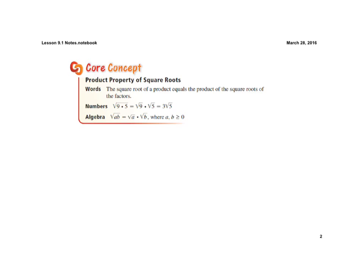If you remember our perfect squares, the square root of 9 is equal to the whole number 3, so we simplify that into 3 times the square root of 5. In algebra, the square root of a times b equals the square root of a times the square root of b, where a and b must both be greater than or equal to 0, because we're dealing with square roots.